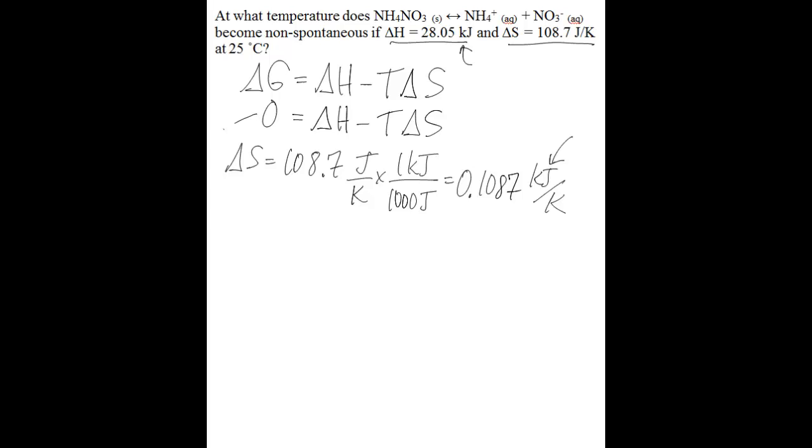You can substitute things into the equation where you've equated delta G to zero. So what you'll have is 0 is equal to 28.05 kilojoules plus temperature times 0.1087 kilojoules per kelvin.